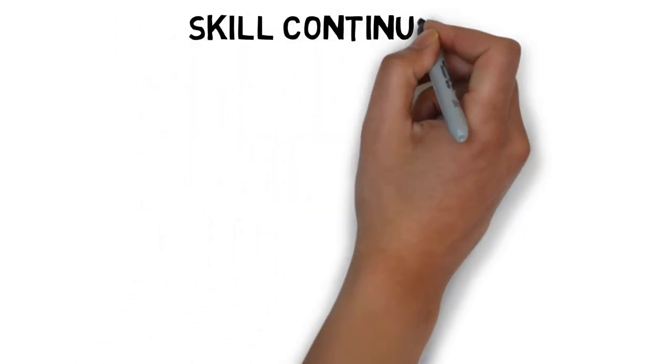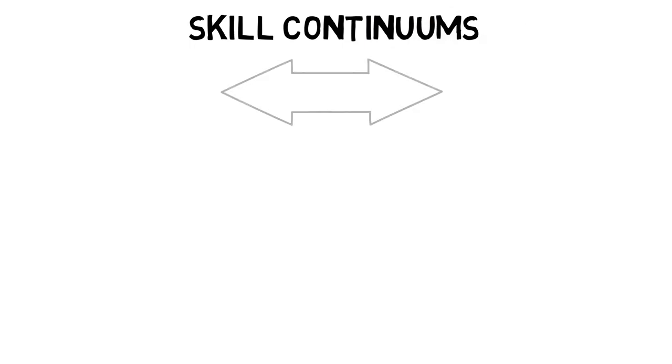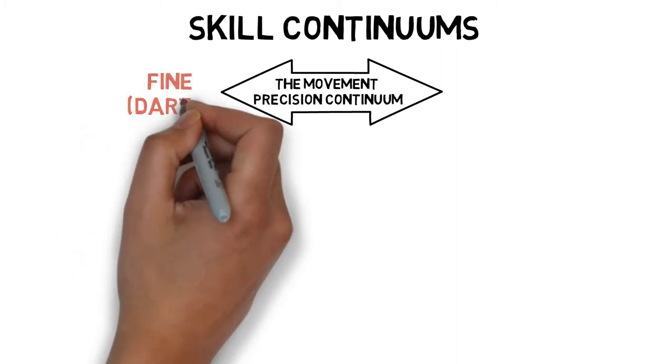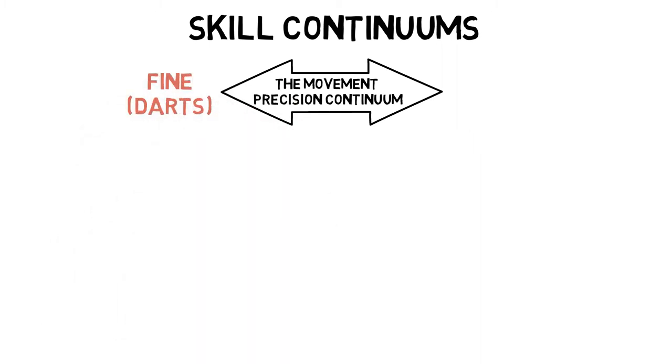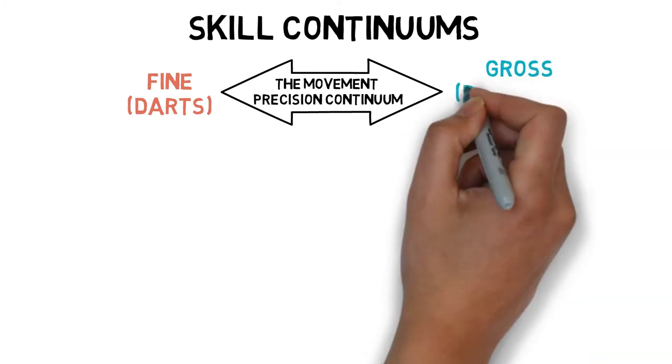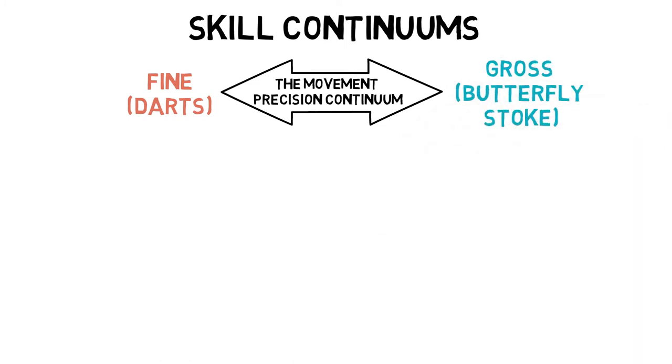There are different continuums relating to different types of skills. The movement-precision continuum deals with fine skills, which are coordinated small movements such as throwing a dart, and gross skills, which are large dynamic movements such as a butterfly stroke.